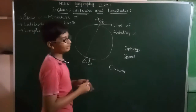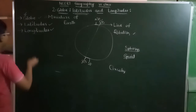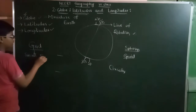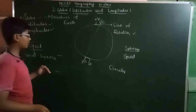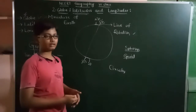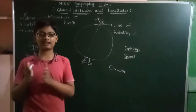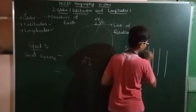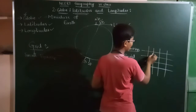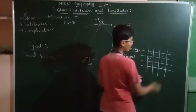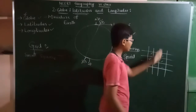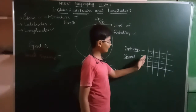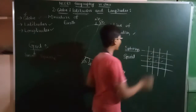Before knowing how to locate the places, let's learn about the grid. A grid is a sheet of small squares with equal sides. Vertical and horizontal lines intersecting each other make these small squares, and together they form a grid.